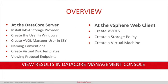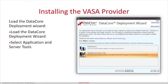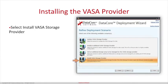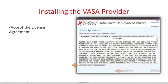Let's get started. To begin, load the DataCore deployment wizard, click Application and Server Tools and click Next. Select VASA Provider for VMware vSphere and click Next. Now select Install VASA Storage Provider and click Next. Now accept the terms and conditions and click Next.